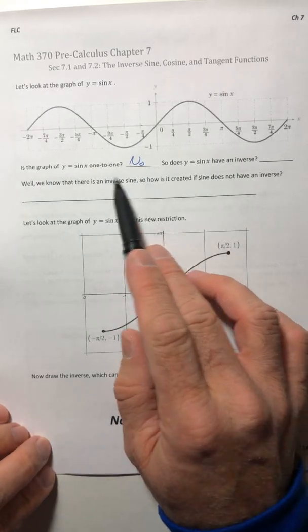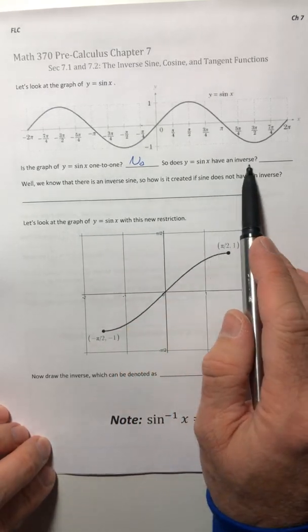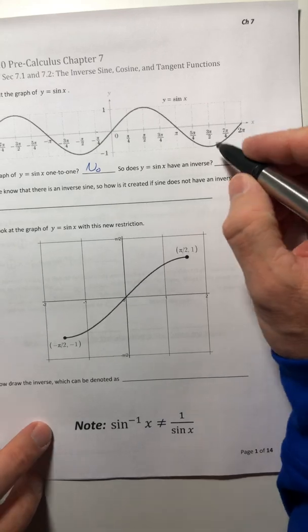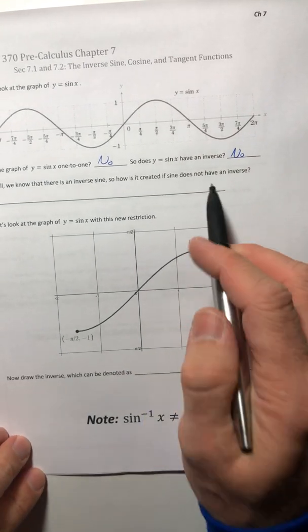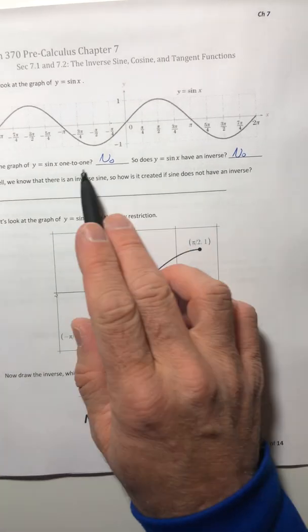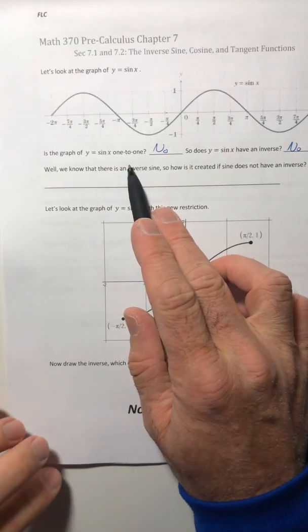So if it doesn't have, if it's not one to one, does it have an inverse? Well, that answer would also be no. Because that was kind of the crux of it. In order to have an inverse, the function had to be one to one.